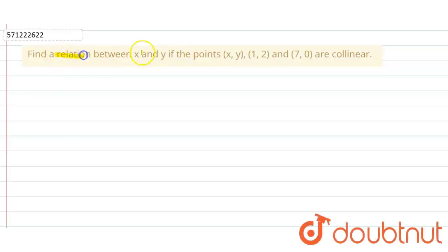In the given question, a relation between x and y, we have to find out if the points (x, y), (1, 2) and (7, 0) are collinear.